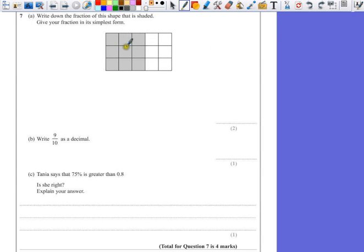Well, just to find the fraction that's shaded in, we've got 9 squares that are shaded out of a total of 1, 2, 3, 4, 5, 6, 7, 8, 9, 10, 11, 12, 13, 14, 15.